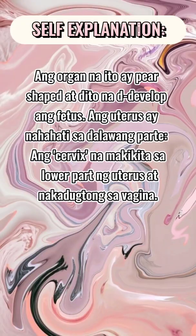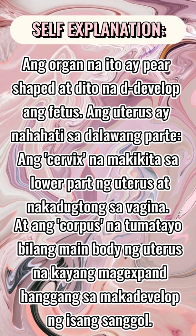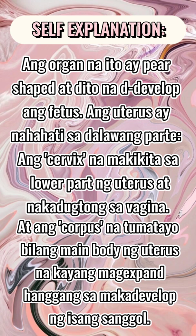Ang organ na ito ay pear-shaped at dito na didevelop ang fetus. Ang uterus ay nahahati sa dalawang parte: ang cervix na makikita sa lower part ng uterus at nakadugtong sa vagina, at ang corpus na tumatayo bilang main body ng uterus na kayang mag-expand hanggang sa makadevelop ng isang sanggol.